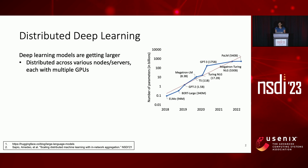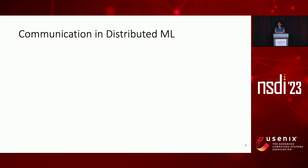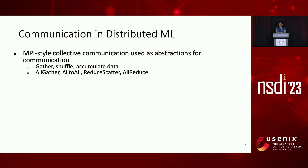Deep learning models are getting larger by the year and need to be distributed across various nodes, each with multiple GPUs. This introduces a network communication overhead to the already expensive ML execution, and GPUs can spend as much as 20 to 65% of their time idle waiting on network communication to finish. Modern day ML systems use MPI-style collective communication as an abstraction for how GPUs can gather, shuffle, or accumulate data between each other.